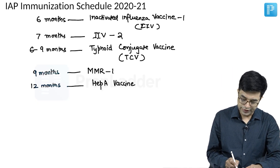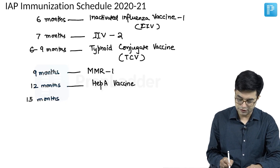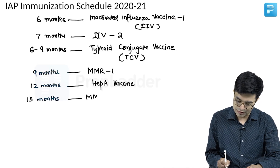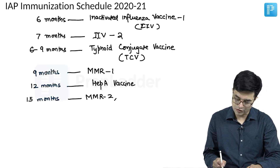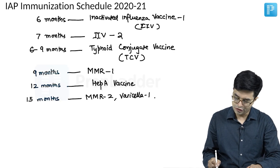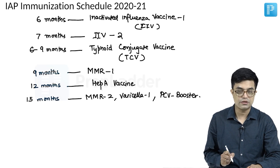The next vaccination comes at 15 months. At 15 months — that is 6 months after MMR1 — you will give the second dose of MMR, MMR2. Plus, you will give varicella (chickenpox) vaccine first dose, varicella 1, at 15 months. In addition, PCV booster will also be given at 15 months.